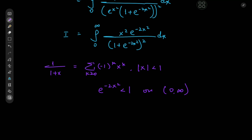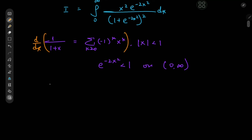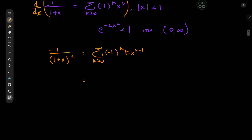But the problem is we don't just have 1 plus x. We have 1 plus something squared, which can be fixed without any issue — all we have to do is differentiate the whole thing with respect to x. So that gives me negative 1 by 1 plus x squared on the left, and on the right we have the sum over k of negative 1 to the k times k times x to the k minus 1 by the power rule. For k equal to 0 we get a 0 term so we can ignore that and start the sum at k equal to 1. Multiplying by negative 1 gives negative 1 to the k plus 1 times k times x to the k minus 1 on the right, and 1 by 1 plus x squared on the left.